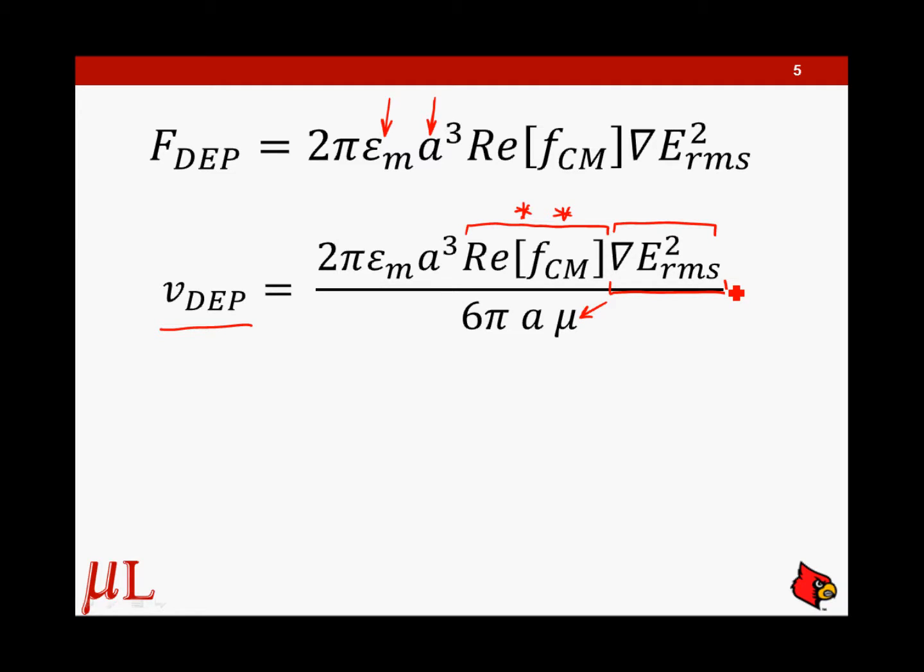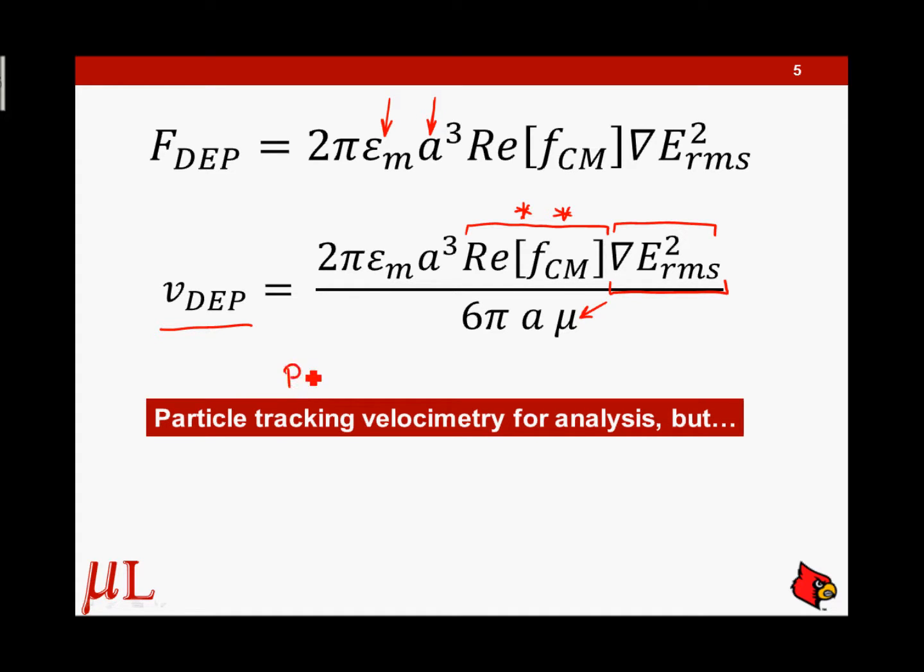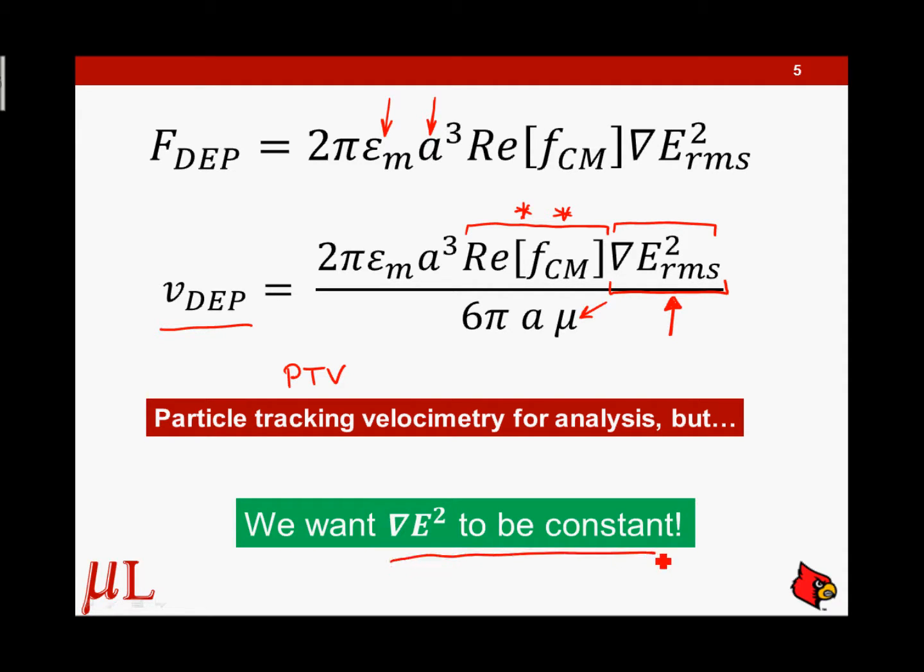this here can be a challenge. We can track particles. Let's say we put them in a dielectrophoretic device, and we track them individually using particle tracking velocimetry, sometimes abbreviated with PTV. But this non-uniformity of the electric field, and it's not just a non-uniformity of the field itself, but the non-uniformity of the square of the electric field. So it's really highly non-uniform in most dielectrophoretic devices. So we're inspired to say, let's create a unique geometry such that this is constant. And from that,